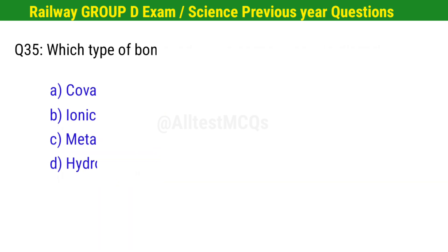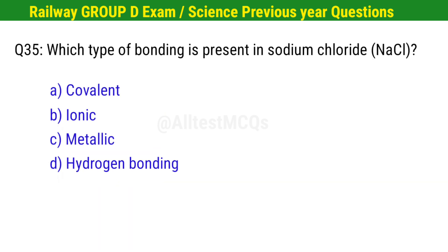Question No. 35. Which type of bonding is present in sodium chloride (NaCl)? Right option is B. Ionic.